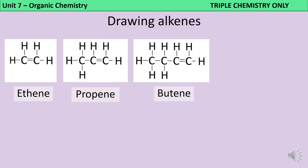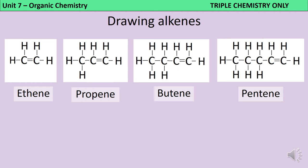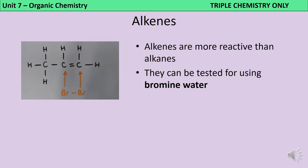Our third alkene is called butene — again there's one carbon-carbon double bond, the other carbons are single bonded in, and every carbon atom is making four bonds in total. The fourth alkene contains five carbon atoms and is called pentene, because a five-sided shape is called a pentagon. By adding up the carbon and hydrogen atoms in each of these molecules, we can work out that the general formula for an alkene is CnH2n. For instance, an alkene containing 16 carbon atoms would have the formula C16H32.